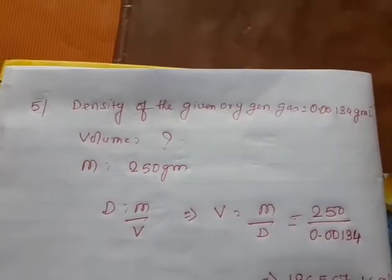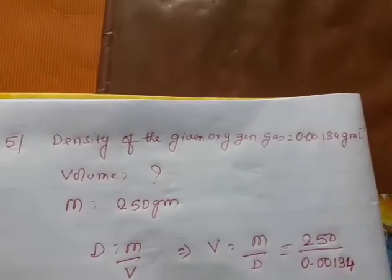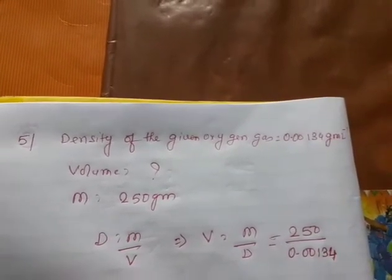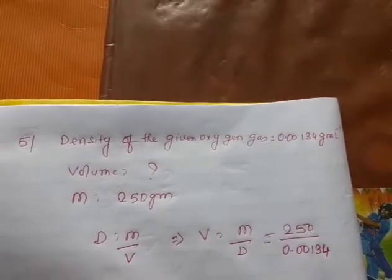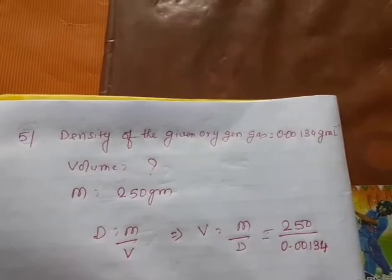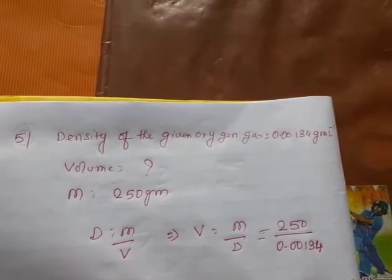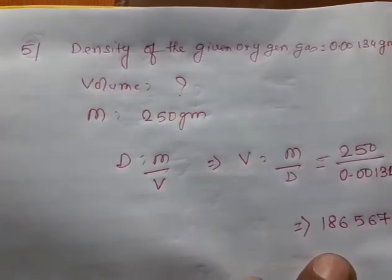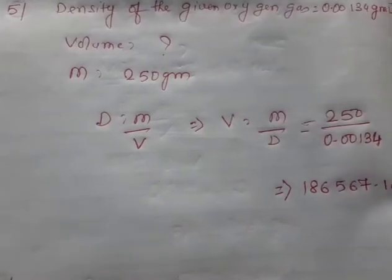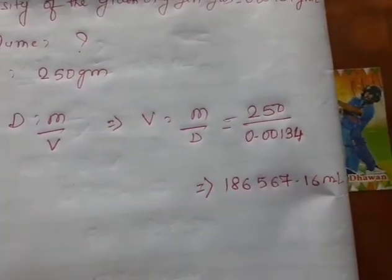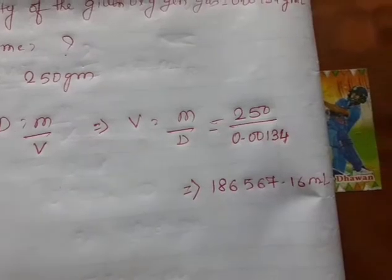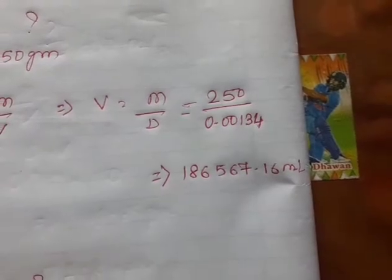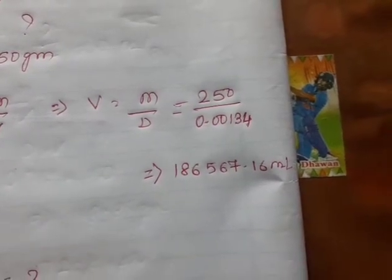Good morning students. Today I will teach you the rest of the numericals. Question number five: the density of the given oxygen gas is 0.00134 gram per liter. We need to calculate the volume; mass is given as 250. Density equals mass by volume, so volume equals mass by density: 250 divided by 0.00134. The answer is 186567.16.